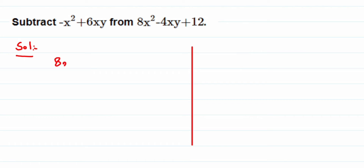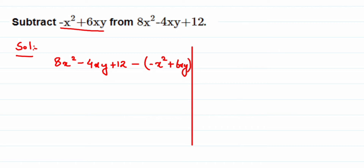For the horizontal method, we write down the second expression — 8x squared minus 4xy plus 12 — first. Then we put a minus sign and write the first expression in brackets: minus x squared plus 6xy. The key thing here is we have a minus outside the bracket, so it's like multiplying minus one throughout the bracket.